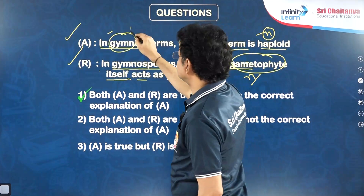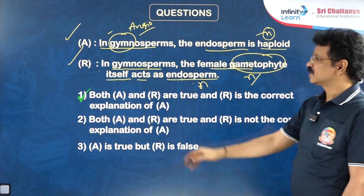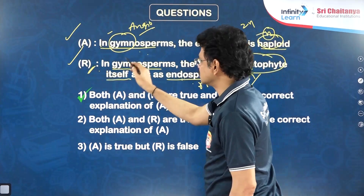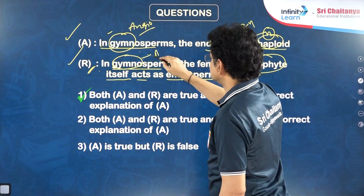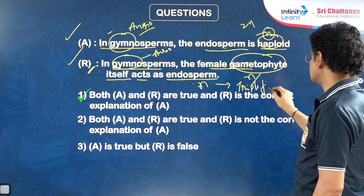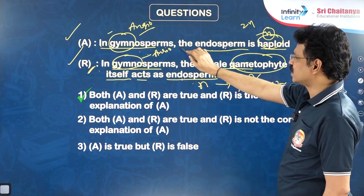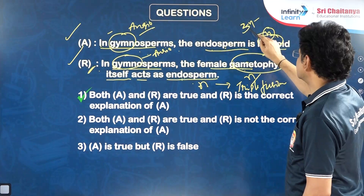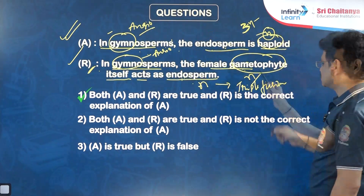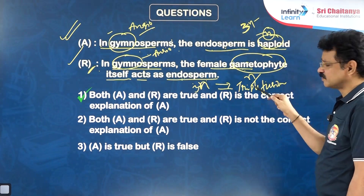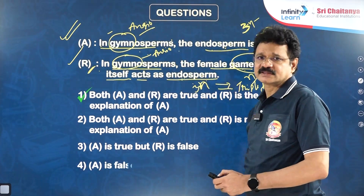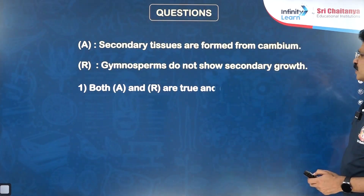If we modify the question to angiosperms: In angiosperms, endosperm is triploid. Reason: Endosperm in angiosperms is formed after fertilization as a result of triple fusion. In triple fusion, a haploid sperm fuses with the diploid secondary nucleus of the central cell — N + 2N gives 3N. This modified statement with angiosperms is true and the modified reason is also the correct explanation — first option. Next question: Secondary tissues are formed from cambium in gymnosperms. Some gymnosperms can exhibit secondary growth.